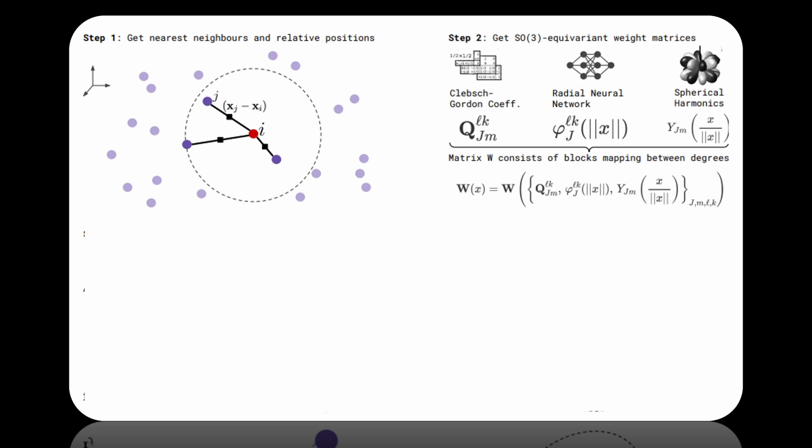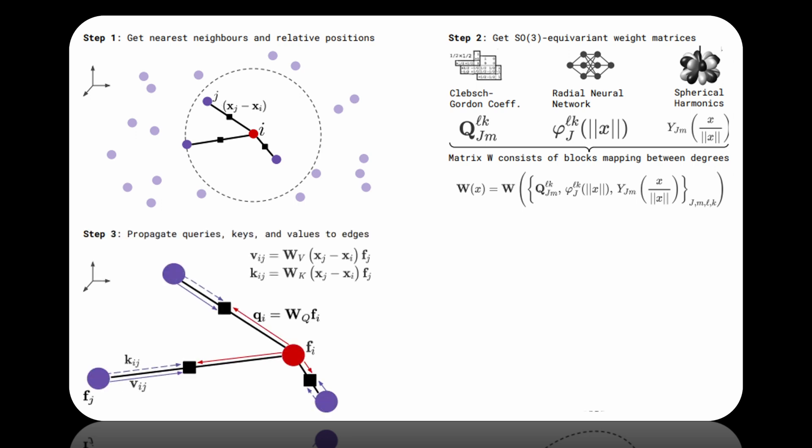The next step is where the tensor field networks comes into play. Instead of using regular weight matrices as in a plain transformer, the space of learnable functions is limited to rotation equivariant kernels based on tensor field networks. This means that all of the components we've learned about before are used here. Spherical harmonics, a learnable radial network and Klebsch-Gordon coefficients. Using these new kernels we are able to override the transformer architecture.